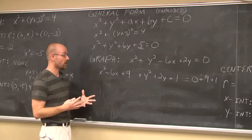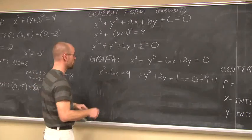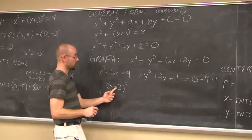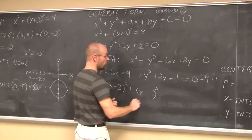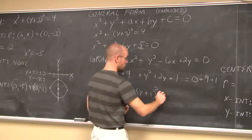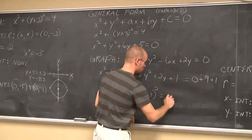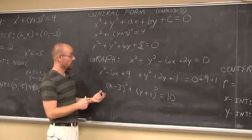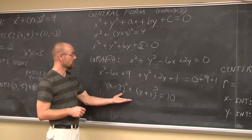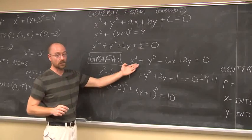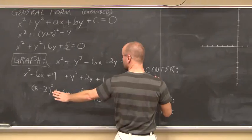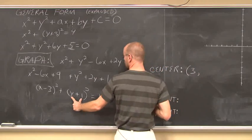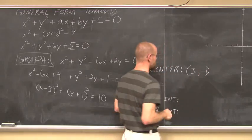Now we factor to get the equation in standard form. The x group factors as x minus 3 quantity squared. The y group factors as y plus 1 quantity squared. The right side is 0 plus 9 plus 1, which equals 10. It is now in standard form. The center — always the opposite of what we see — is positive 3 (opposite of negative 3) and negative 1 (opposite of positive 1). So the center is 3, negative 1.